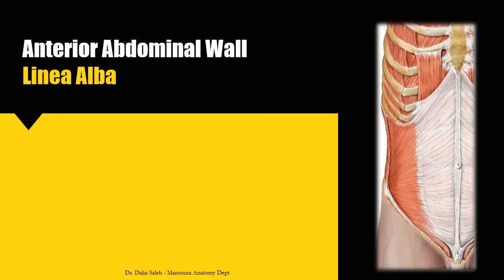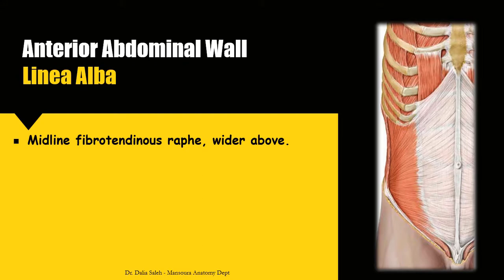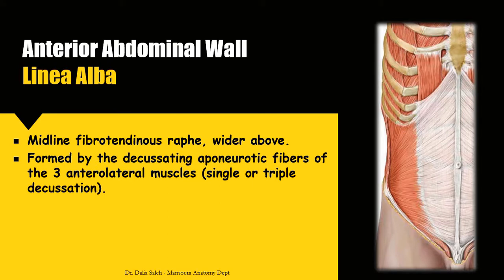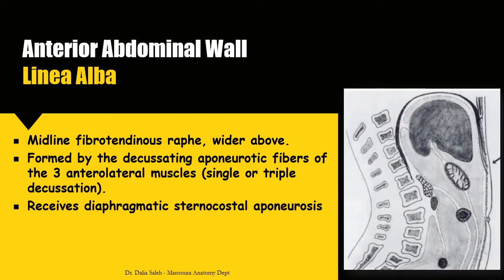Another aponeurotic component of the anterior abdominal wall is the linea alba. It is a midline fibrotendinous band, wider above than below but widest at the umbilical region, stretched between the xiphoid process and the symphysis pubis. It is formed by the decussating aponeurotic fibers of the lateral muscles in either a single or triple decussation. The posterior surface of the linea alba in the epigastric region receives a diaphragmatic sternocostal aponeurotic extension, which synchronizes movement of the epigastric aponeurosis with the diaphragm during respiration.